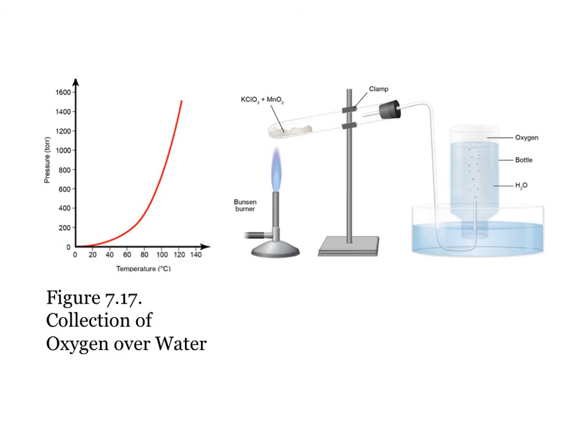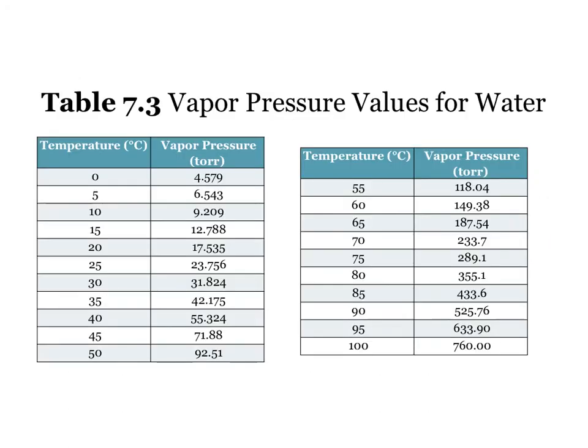Gases that are only slightly soluble in water are often collected over water. These gas samples will contain water vapor at a partial pressure that is dependent upon the temperature of the mixture. Water's vapor pressure is independent of the volume of liquid or gas in the mixture. The vapor pressure of water in these experiments is a temperature dependent property that is listed in tables that you can look up or will be given to you in quizzes and exams.